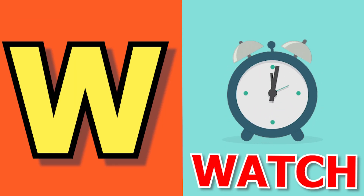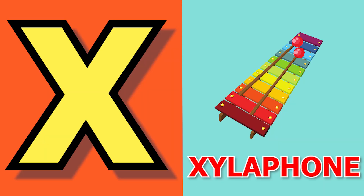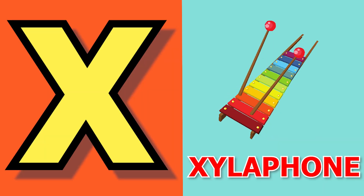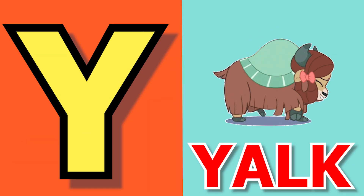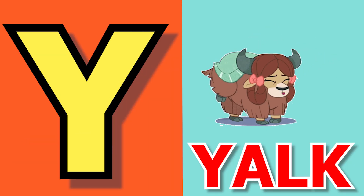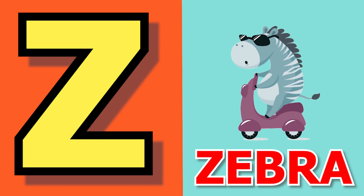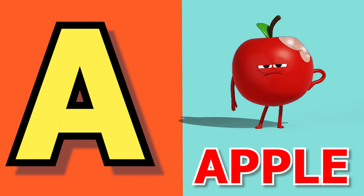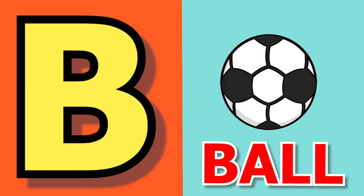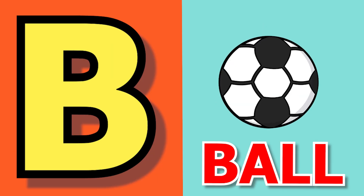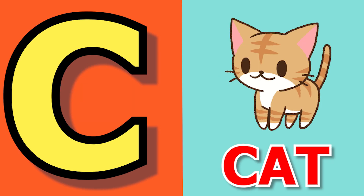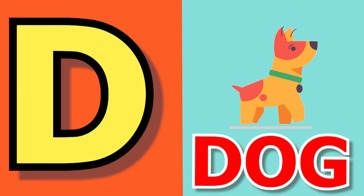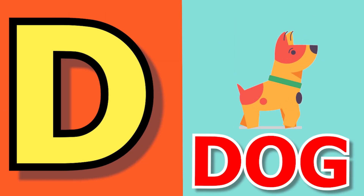W for watch, X for xylophone, Y for yak, Z for zebra. A for apple, B for ball, C for cat, D for dog.